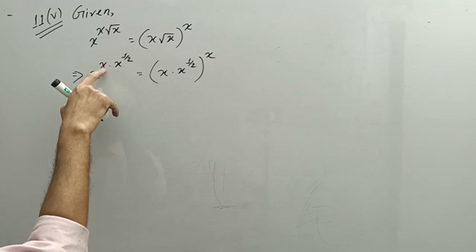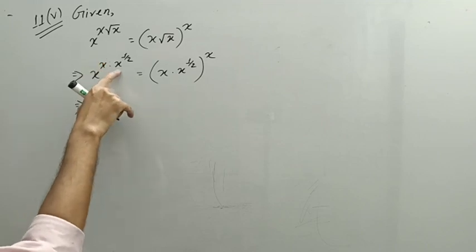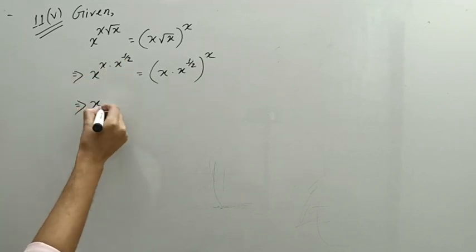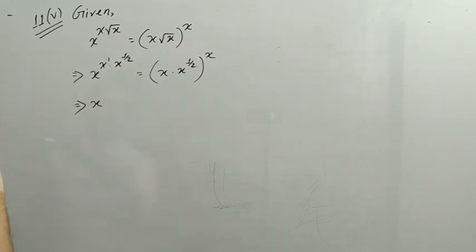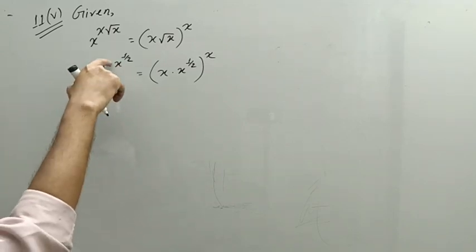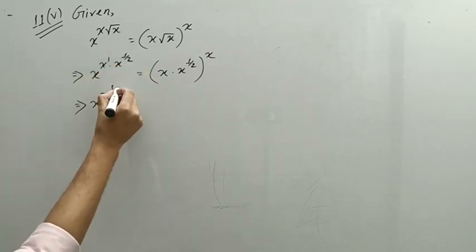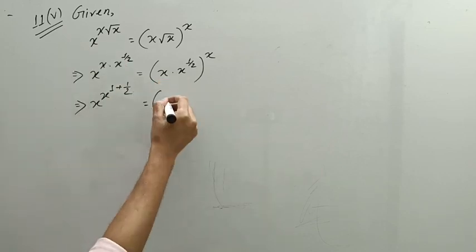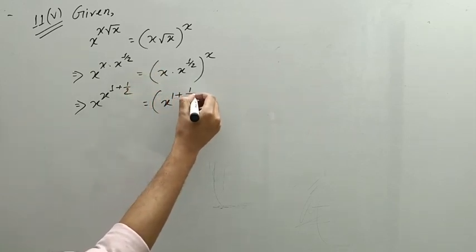Now we see that x is common, and the power: x is x, and x is x, and x is x. So the 2x is x, and x is 1 plus 1 by 2. So the 2x is x, and x is 2x. So the 2x is x and x is 1, so the 2x is 1 plus 1. So the 1 is 1 plus 1 by 2. So x is x, equal to 1 plus 1 by 2.